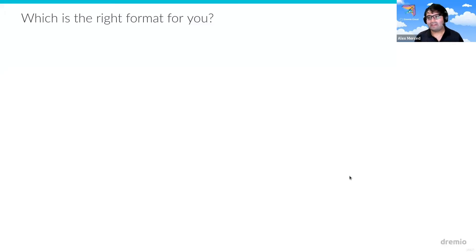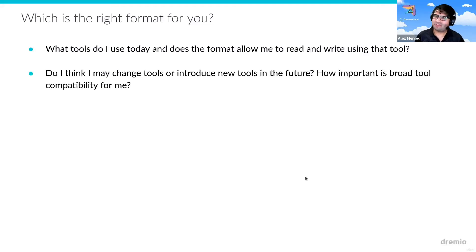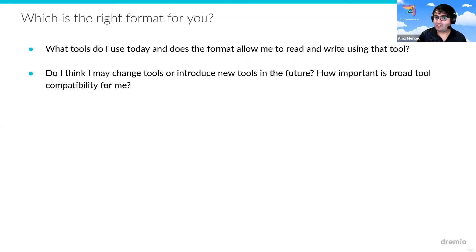At the end of the day, what is the right format for you? It's not one size fits all, but there are some questions you can ask yourself as you go out there doing your proof of concepts. What tools do I use today? You want to make sure you use the thing that supports your write and read tools. Do I think I may change tools? Are there any tools coming down the pipeline, and do they support any formats? Do I plan on changing the tools I use in the future? How important is that broad compatibility for my particular workload? For example, if you do everything in Spark, it may not matter as much, but if you use different tools, it becomes a heavier consideration.